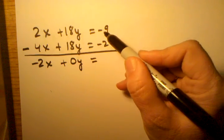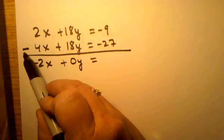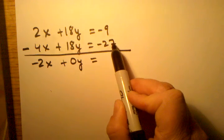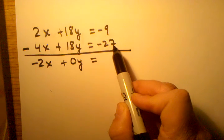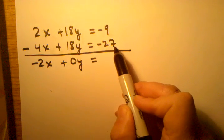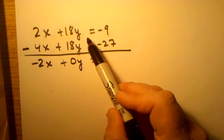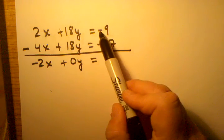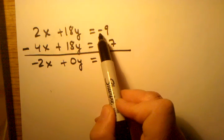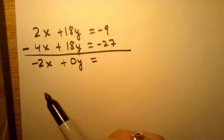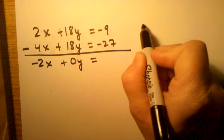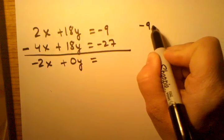And here, I have negative 9 minus negative 27. We have to be very careful with our signs in a problem like this. I see tons of mistakes being made, not because the wrong process is being followed, but just simply because the wrong number crunching is being done when we're subtracting negative numbers. So I'm going to, just to be extra careful, I'm going to write this out on the side.